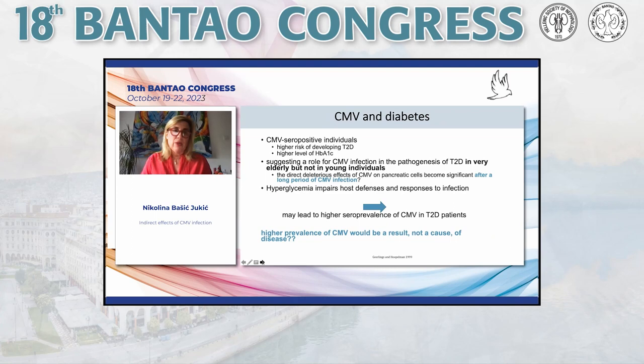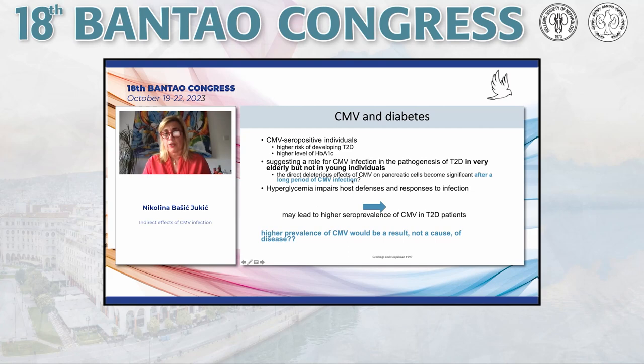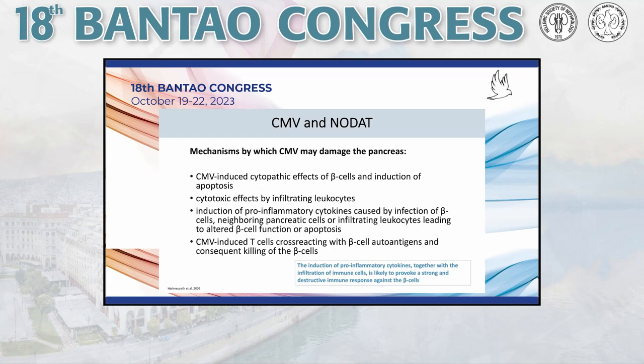CMV is also implicated in diabetes. CMV-seropositive individuals have a higher risk of developing type 2 diabetes and higher levels of glycated hemoglobin, suggesting a role for CMV infection in the pathogenesis of type 2 diabetes in the very elderly but not in young individuals. Scientists suppose that the direct deleterious effects of CMV on pancreatic cells become significant only after a long period of CMV infection. Some investigators suggest the higher prevalence of CMV may be a result, not the cause, of diabetes.